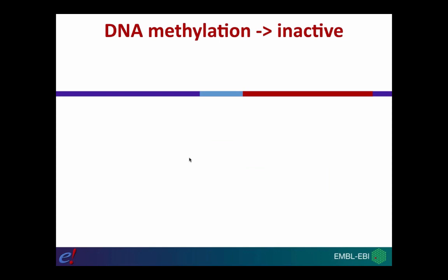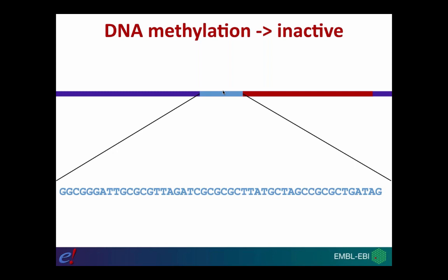The other branch of epigenetics is DNA methylation. We can think of a region in our genome with a gene of interest and an upstream region. This upstream region may have CG repeats — CpG islands — and the cytosines within these CpG islands can be selectively methylated by an enzyme called DNA methyltransferase. In practice, some cytosines will be methylated and some will not.